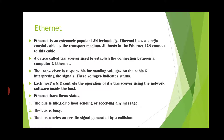Ethernet has three statuses. First, the bus is idle — meaning no host is sending or receiving any message. Second, the bus is busy — at that time any one of the hosts can send or receive a message. Third, the bus carries an erratic signal generated by a collision, meaning multiple hosts are sending messages at the same time.